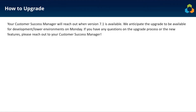Before we get started, a brief note on how to go about upgrading to version 7.1. After this webinar, if you're interested in upgrading to the newest version of Tempest, you can do so by reaching out to your customer success manager. We anticipate this upgrade will be available for development or lower-level environments by next Monday. Feel free to reach out with any questions.